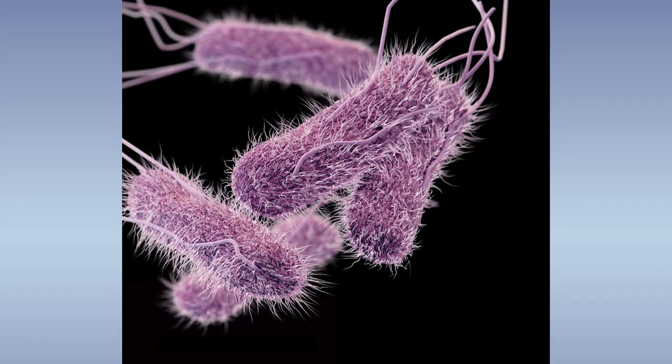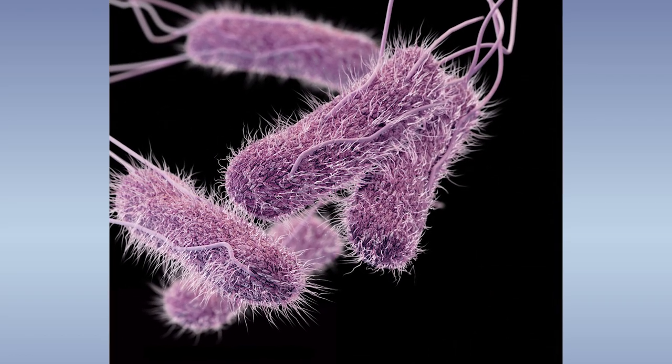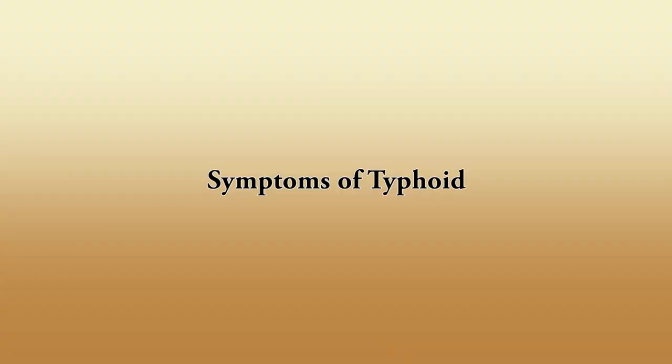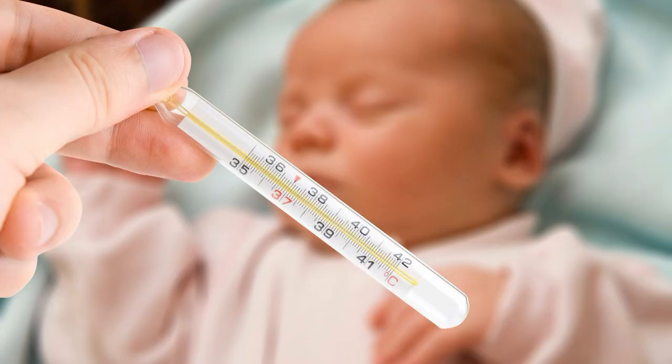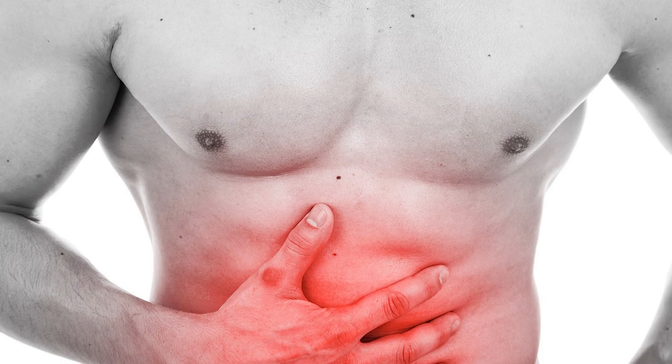Our daily basic need is water, and it can spread numerous diseases if contaminated. Typhoid — its causative agent is Salmonella Typhi, a bacterium. Typhoid is an infection caused by this bacterium, which lives in the intestines and bloodstream of humans. The two major symptoms of typhoid are fever and rash. Other symptoms include weakness, abdominal pain, constipation, headaches, confusion, diarrhea, and vomiting.